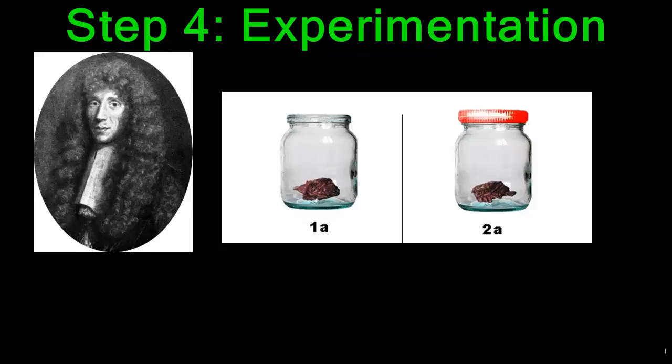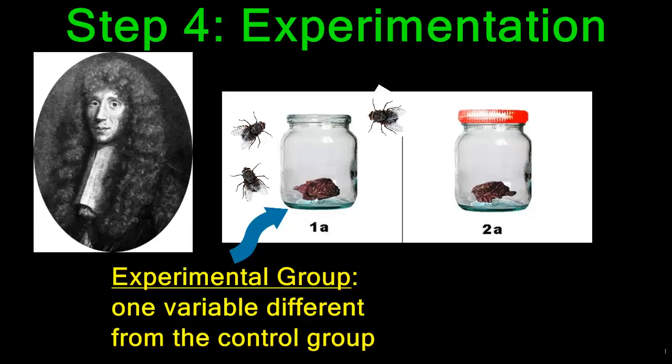Step 4 is when you actually test your hypothesis by conducting an experiment. In Redi's case, he set up two jars. Both had pieces of decaying meat inside. The only difference between the jars is that one had a cover and the other did not. The one with no cover would attract flies to the meat. So each of these two groups are referred to as an experimental group and a control group. In this case, the experimental group is the jar that has no lid and allows flies to get to the meat. An experimental group only has one variable that is different from your control group. In this case, the flies which can get to the meat.